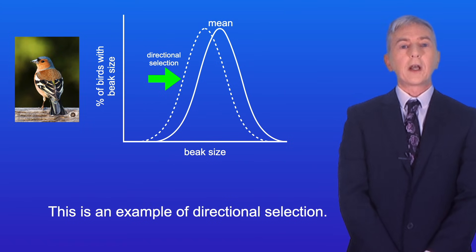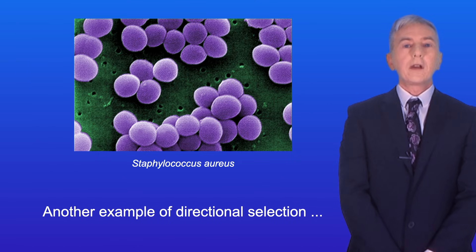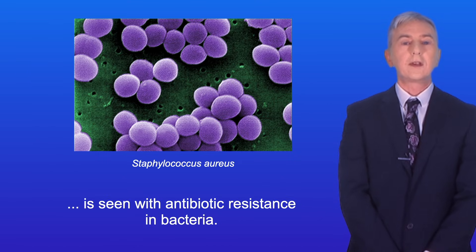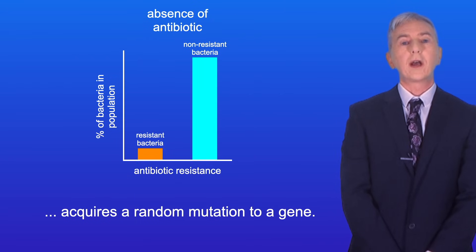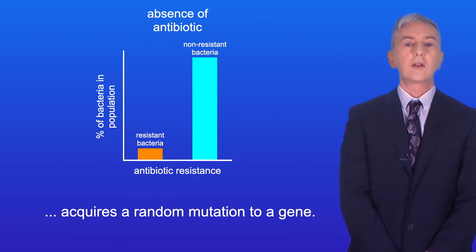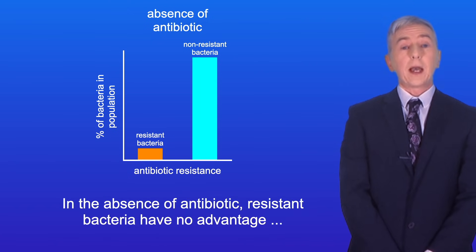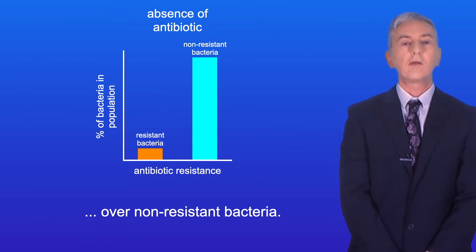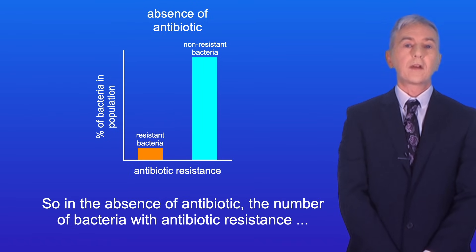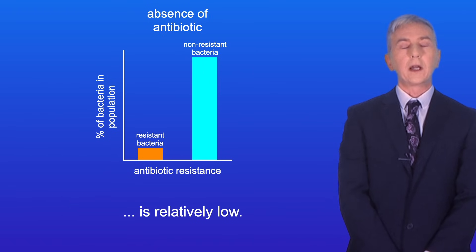So this is an example of directional selection. Another example of directional selection is seen with antibiotic resistance in bacteria. Antibiotic resistance occurs when a bacterium acquires a random mutation to a gene. In the absence of antibiotic, resistant bacteria have no advantage over non-resistant bacteria, so the number of bacteria with antibiotic resistance is relatively low.